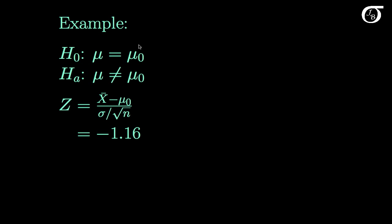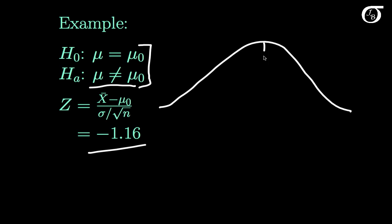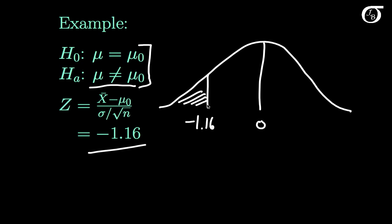Now suppose we're using a two-sided alternative. We're testing the null hypothesis that mu equals some value against a two-sided alternative, and we get a z-statistic of minus 1.16. Drawing our standard normal curve with 0 in the middle and minus 1.16 marked in — our alternative hypothesis is two-sided, so values far out in the left tail give evidence against the null hypothesis, or values far out in the right tail give evidence against the null hypothesis.